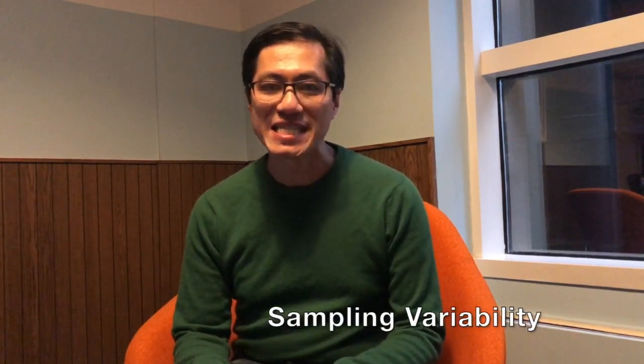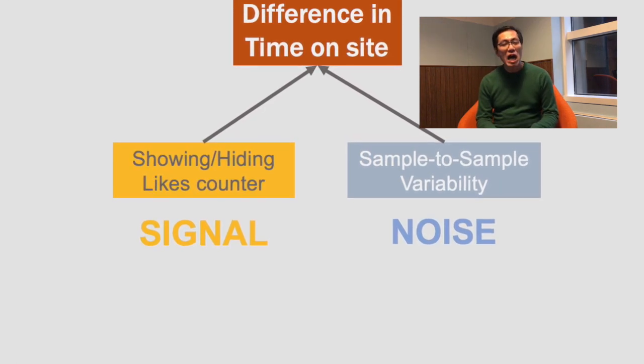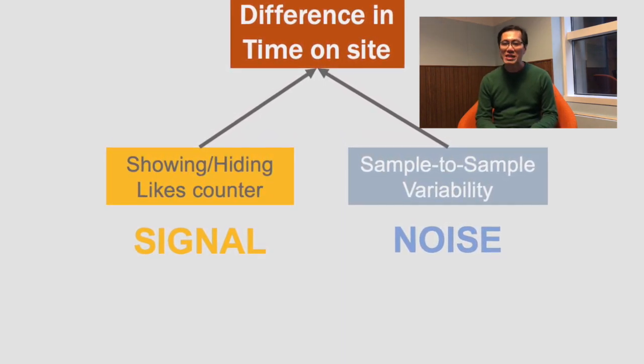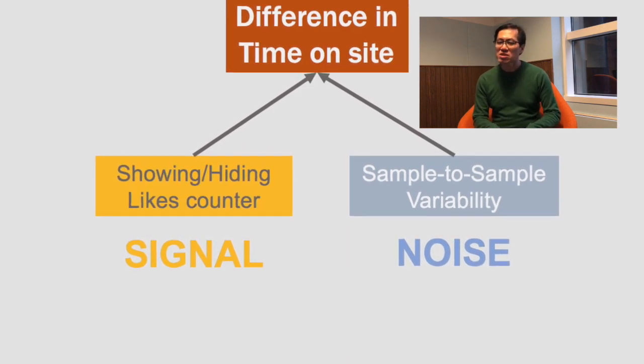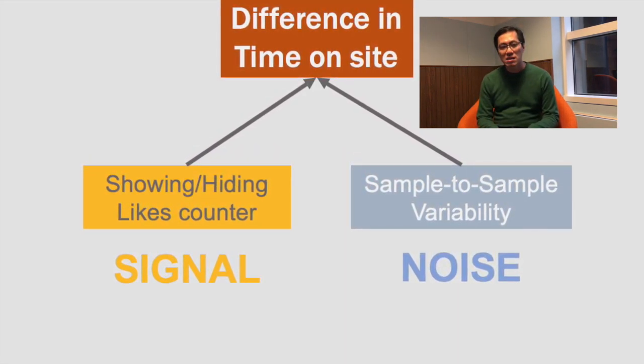Such variability is known as sampling variability. Each sample is a set of users, and a sample randomly selected will contain different users from another sample randomly selected. The key question is: how much of that one minute per day difference is due to the sampling variability between different sets of users, and how much is due to showing or not showing the likes counter?